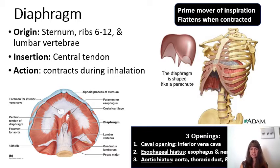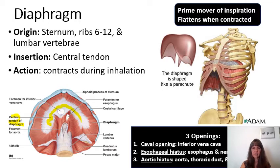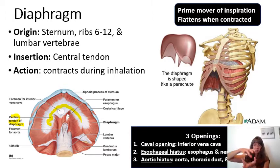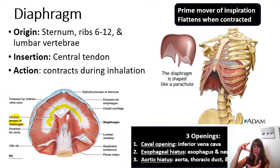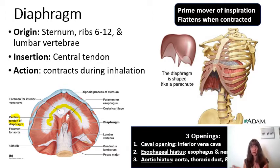The diaphragm is a muscle shaped like a parachute. It attaches to the sternum, ribs 6 through 12, and the lumbar vertebrae, with its insertion on the central tendon of the diaphragm. The diaphragm moves inferiorly during inhalation — as it contracts and moves inferiorly, it creates more space inside the thoracic cavity, establishing a pressure gradient where lower internal pressure causes air to flow passively into the lungs down its concentration gradient.